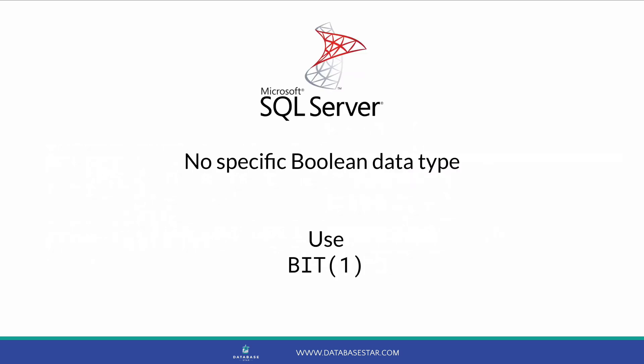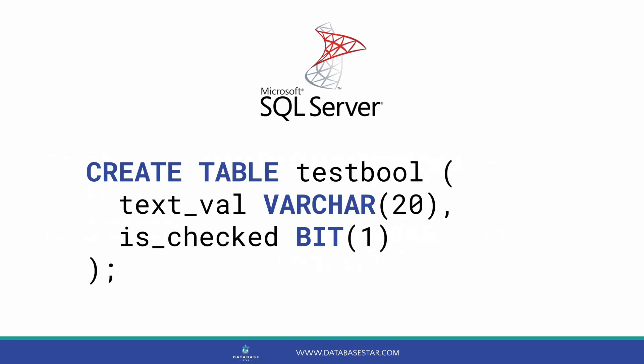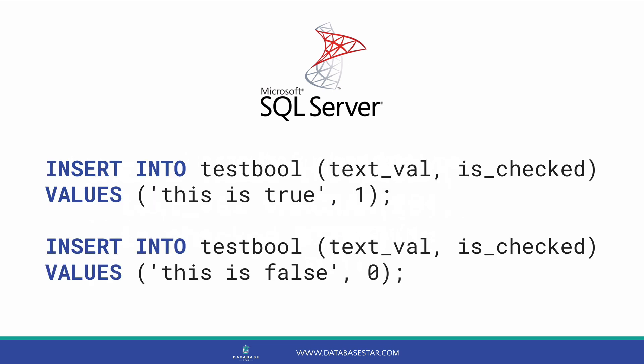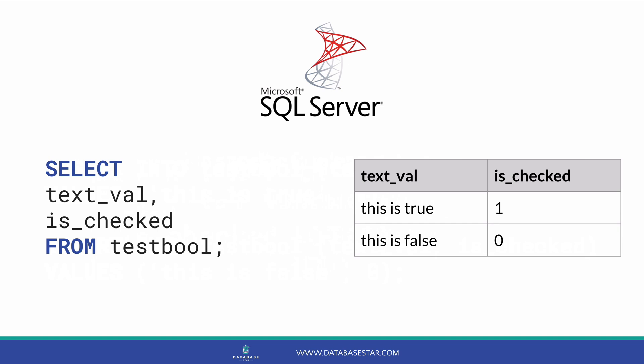Next up we have SQL Server. Like Oracle, there is no Boolean data type in SQL Server. However, a common solution is to use a bit data type. This is a very small number field and can store the values from 1 to 64 in the format of 1s and 0s. We can use it to store either 1 for true or 0 for false. The SQL to create a table would look like this. We have a varchar value here for the first column just for demo purposes. The second column is called IsChecked and is a bit type with one digit. We don't need to add a check constraint to limit the values to 1 or 0 because the bit data type only accepts 1s and 0s. Here are some insert statements to add data to the table — we just specify 1 for true and 0 for false. We can select from this table and see the values of 1 and 0.